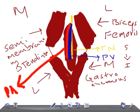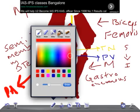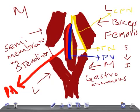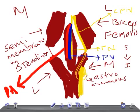The common peroneal nerve is also important. It lies in the lateral part of the fossa and runs along the tendon of biceps femoris. It then wraps around the lateral surface of the fibular neck - going around the fibula bone like this.